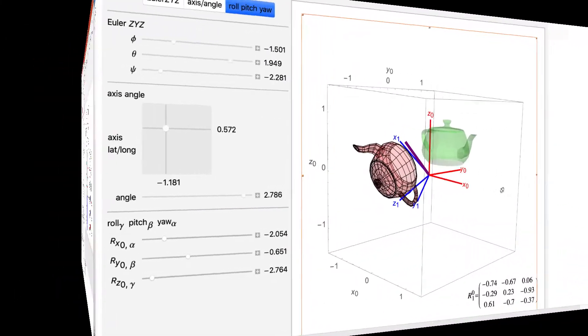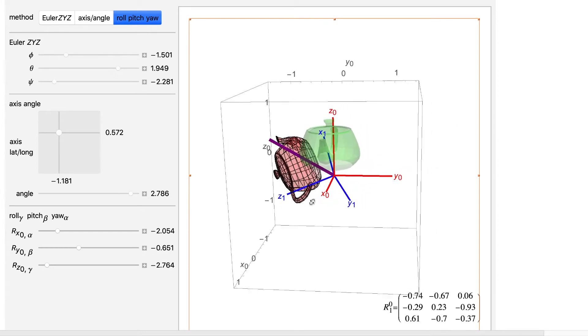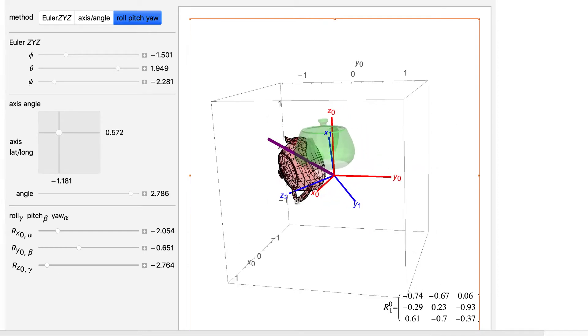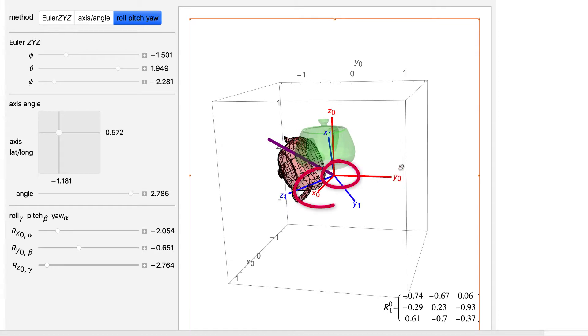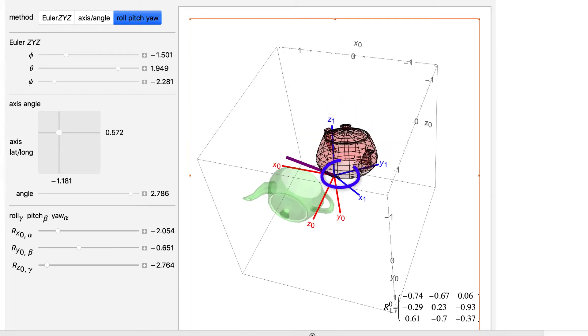This demonstration shows three parameterizations to describe rotations between a fixed coordinate frame, denoted by O0, X0, Y0, Z0, and a rotated frame, denoted by O1, X1, Y1, Z1.